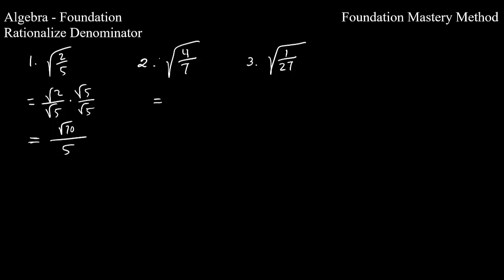This one, you can simplify first. Radical 4 will give you 2, and then radical 7. And then multiply numerator and denominator by radical 7. You get a 7 here, 2 radical 7. You are done also with that one.